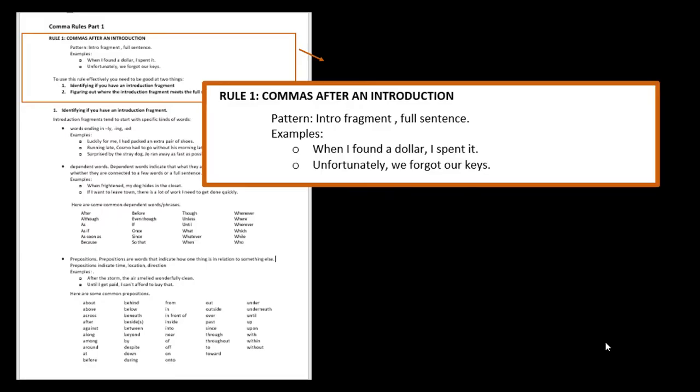So the first comma rule we're looking at is a comma after an introduction fragment. This should sound familiar because one of the ways that we talked about connecting full sentences is breaking one of the full sentences into a fragment and hooking it to a full sentence. When we hooked that fragment onto the front we had to add a comma after the fragment. So the pattern that we have is introduction fragment, comma, full sentence. And a couple examples. When I found a dollar, I spent it. Unfortunately, we forgot our keys.